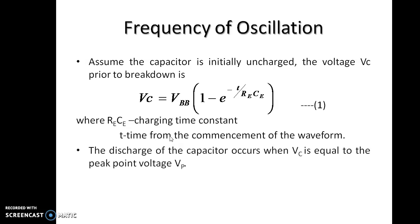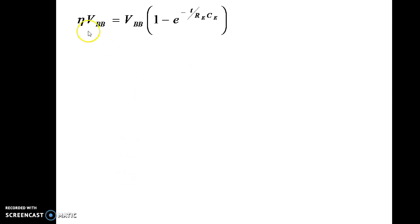The discharge of the capacitor occurs when the capacitor voltage is equal to the peak voltage. So we can replace Vc by Vp. Hence, equation 1 changes to Vp equal to VBB into 1 minus e power minus T by REC. We already know Vp is eta VBB plus V gamma. We can approximate by neglecting V gamma, so Vp equals eta into VBB. The expression changes to eta VBB equal to VBB into 1 minus e power minus T by REC.